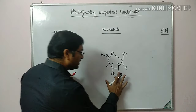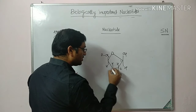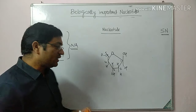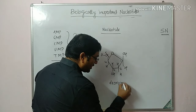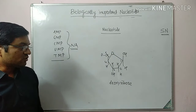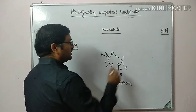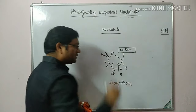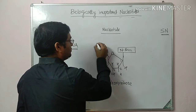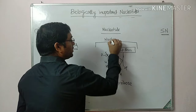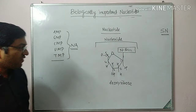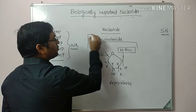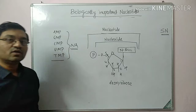However, when it lacks oxygen at the second carbon — this is the 1st, 2nd, 3rd, 4th and 5th carbon — when it lacks oxygen at the 2nd carbon, it is known as deoxyribose. When this sugar is attached with a nitrogen base, it is known as a nucleoside. When that nucleoside is esterified at the 5th carbon with phosphate, it is known as a nucleotide or nucleoside monophosphate.